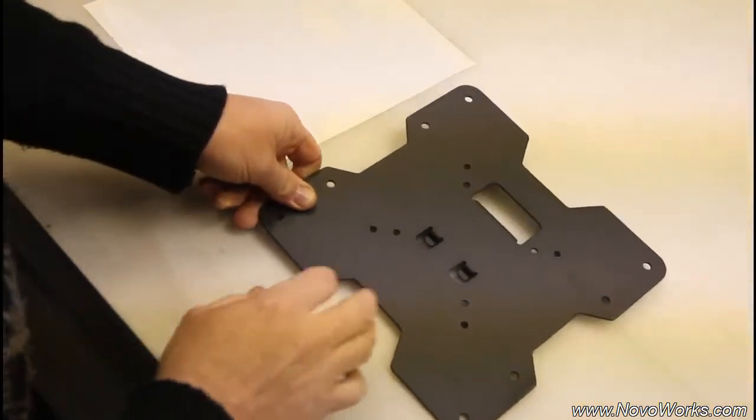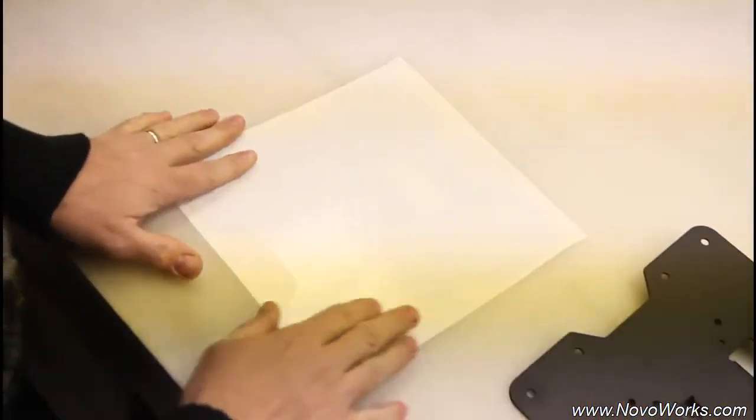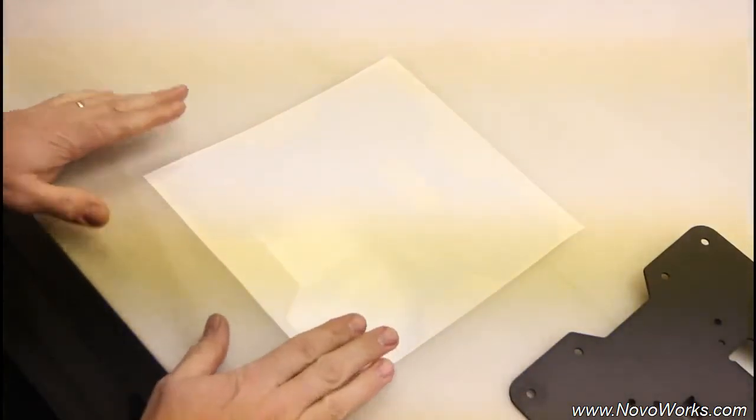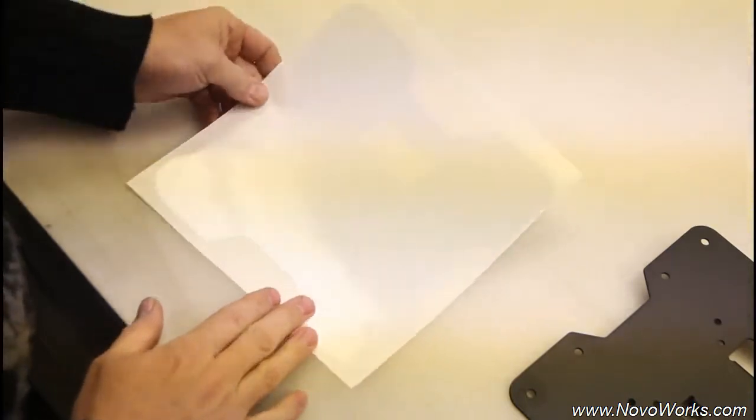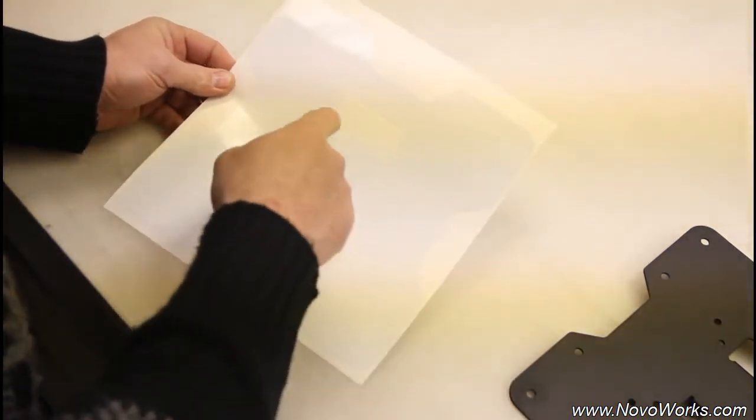So what we're going to do is, here's the graphic as it's been provided. Again this is just white so it's just an example, but you can basically see the shape, see that there's a cutout in the center.